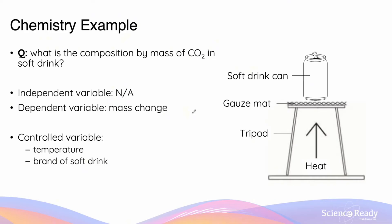Now let's apply the theory to two examples, starting with a chemistry example. Say I want to determine the composition by mass of carbon dioxide in a can of soft drink. I'll do this by placing the soft drink above a tripod and gauze mat with a heat source — a Bunsen burner — to evaporate and remove the carbon dioxide, so that the mass of the can decreases throughout the experiment. I don't have an independent variable here since I'm only investigating one type of soft drink.